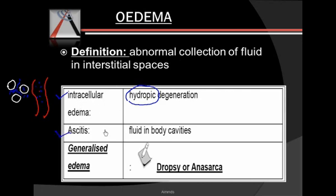Ascites is a collection of fluid in body cavities, and we have generalized edema. The term for generalized edema is dropsy or anasarca.